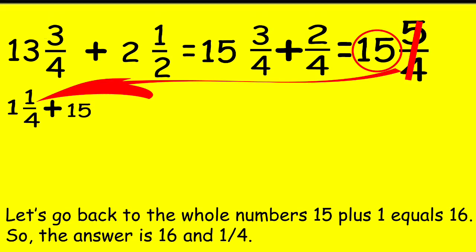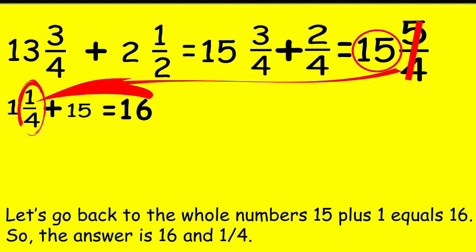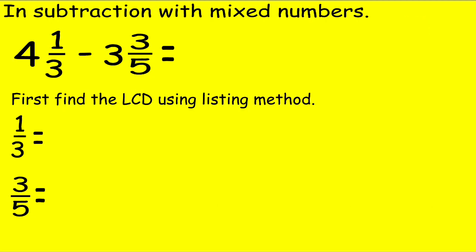Let's go back to the whole number: 15 plus 1 equals 16, plus 1/4 equals 16 and 1/4. Now, in subtraction with mixed numbers, subtract 4 and 1/3 minus 3 and 3/5.